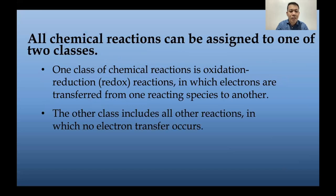All chemical reactions can be assigned to two classes. The first class is known as redox, or oxidation-reduction, in which electrons are transferred from one reacting species to another. The other class includes all reactions in which no electron transfer occurs. The five types of chemical reactions from my previous video can be classified into these two classes — redox and not redox.